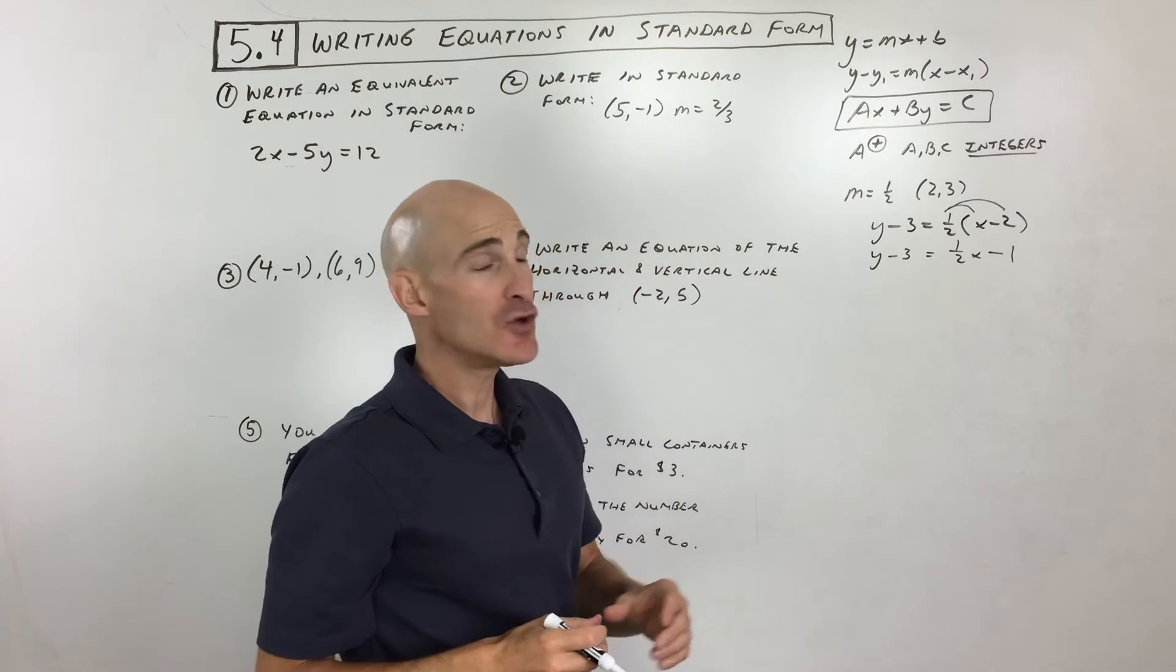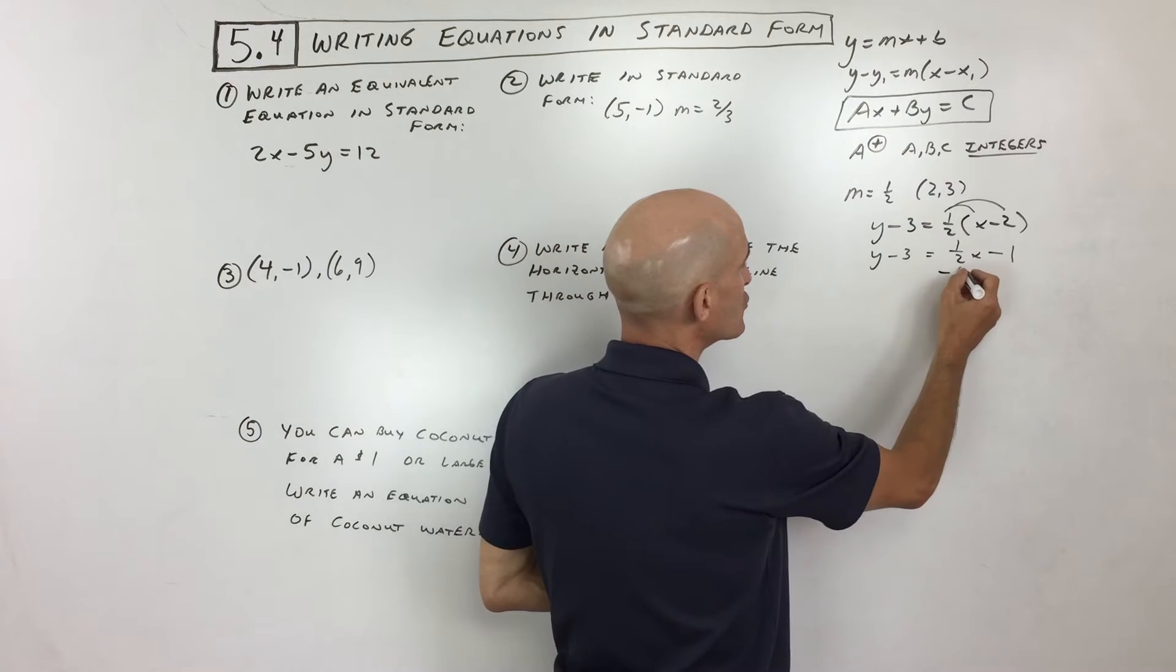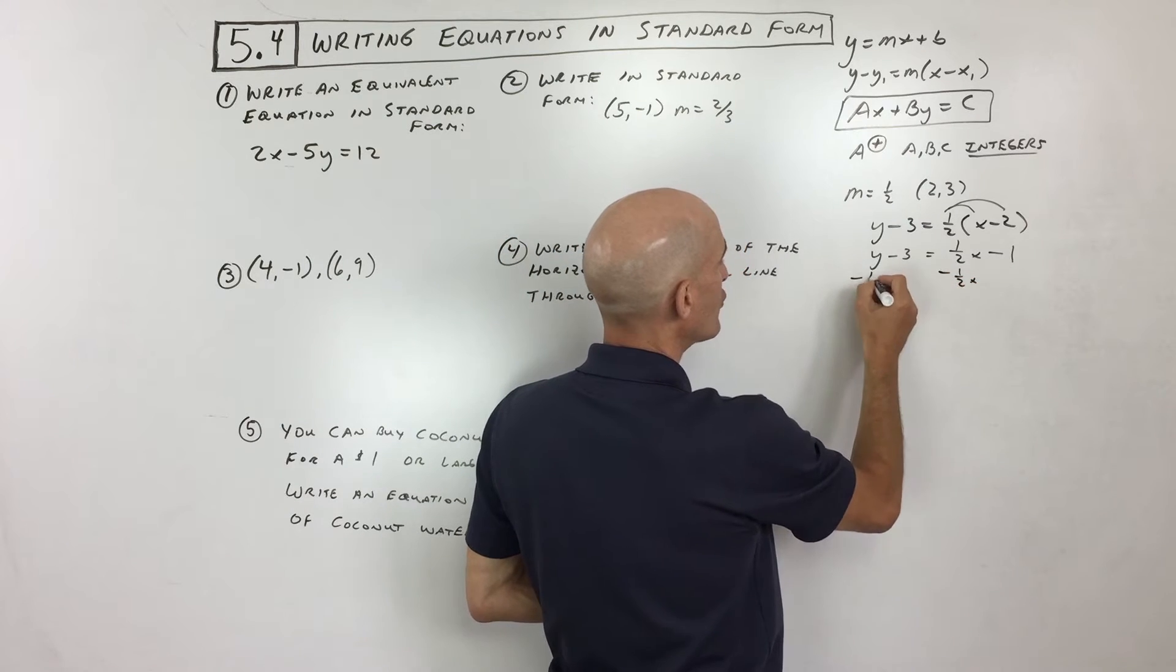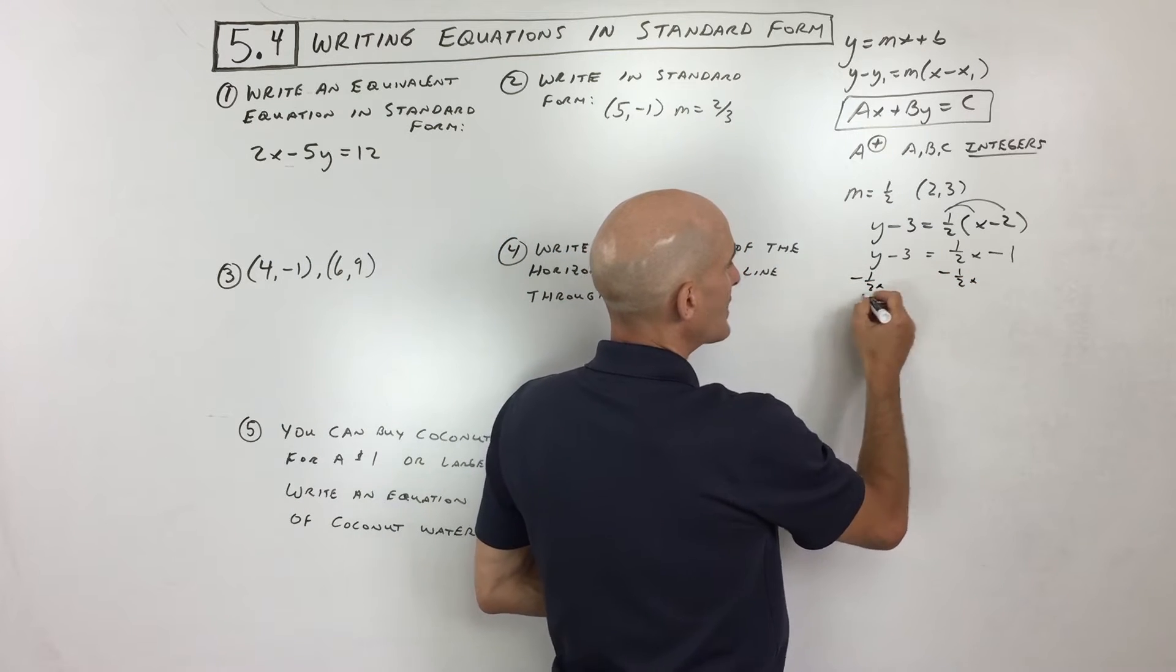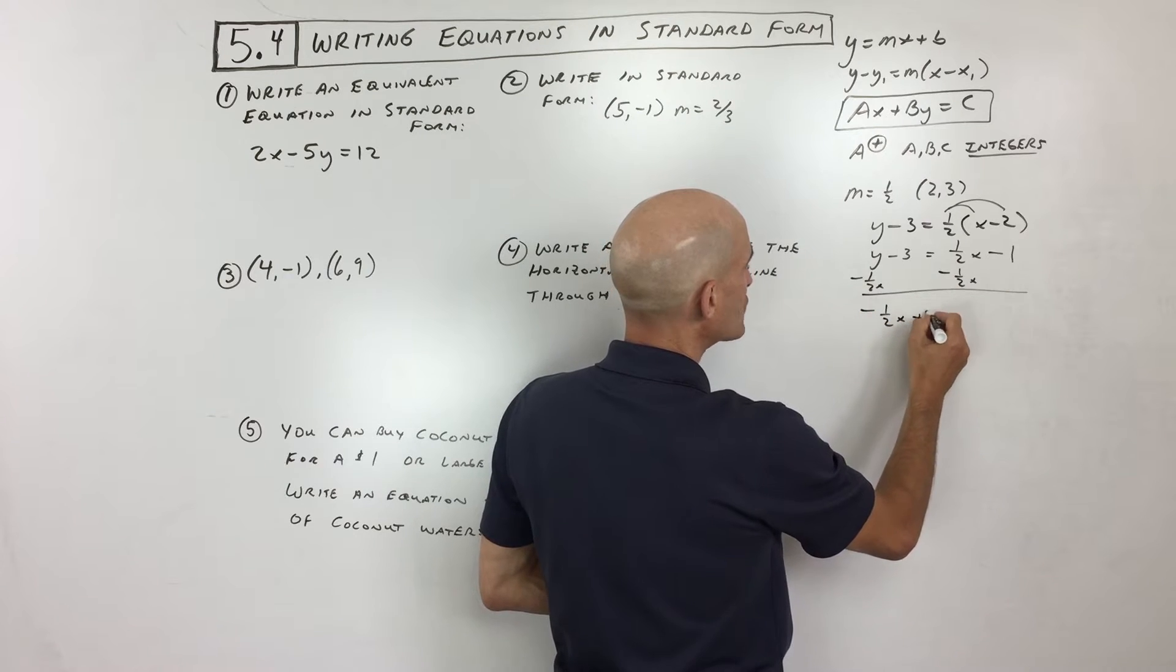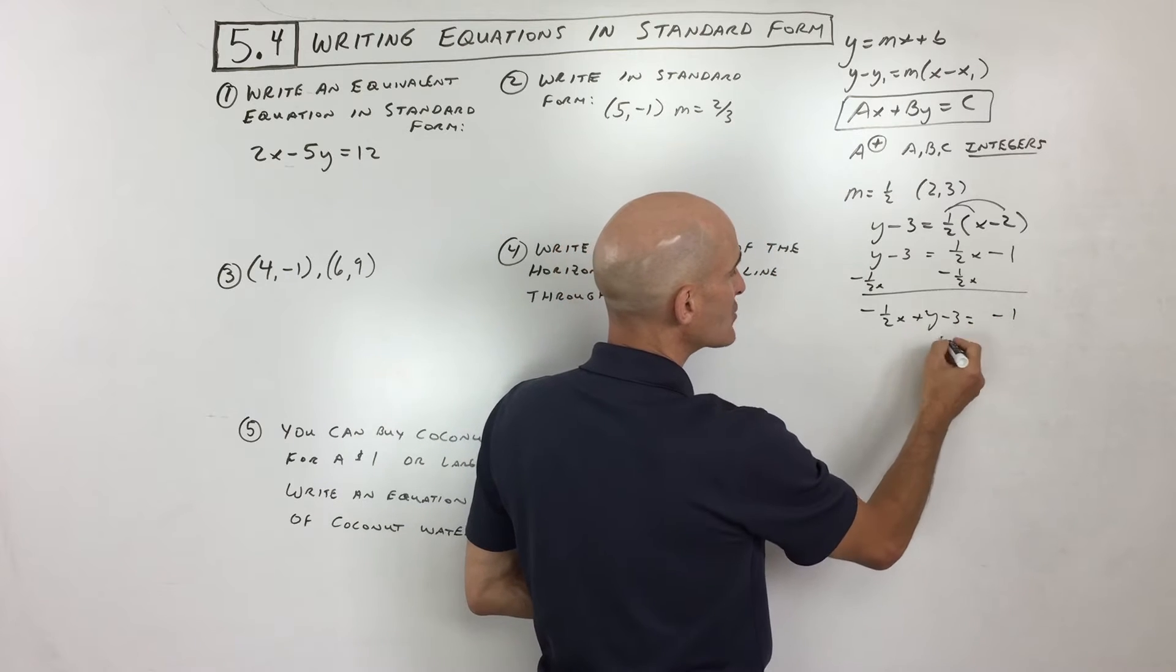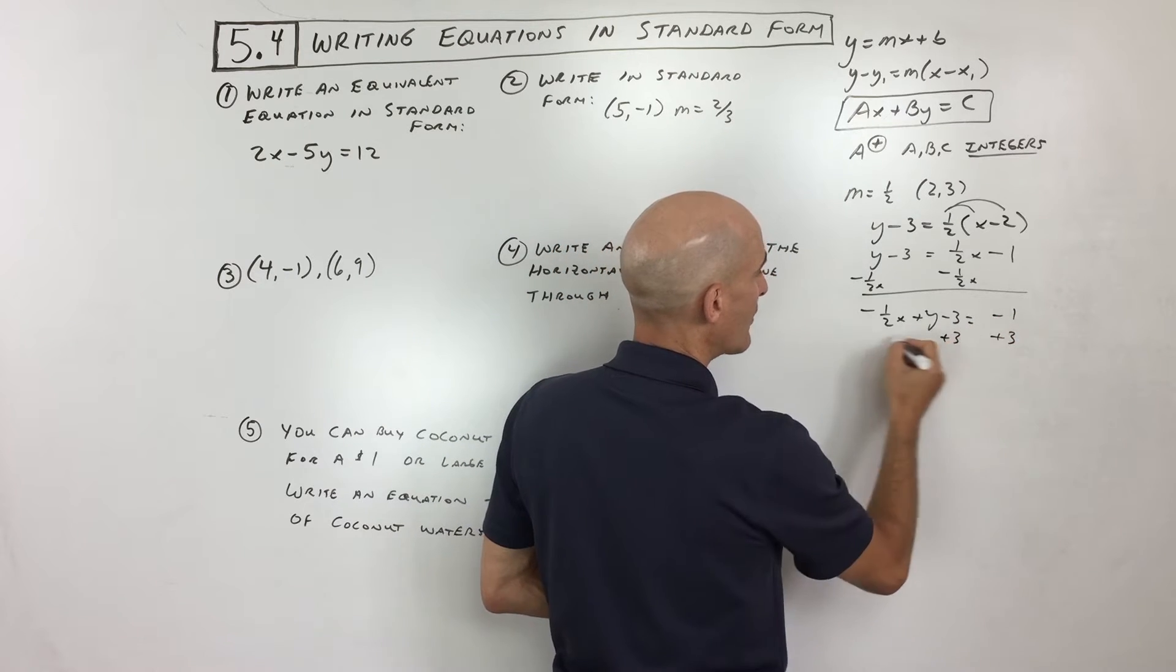Now, what we want to do is we want to get the variables on the left, numbers on the right. So what I'm going to do is I'm going to subtract the one-half x from both sides. Okay, so let's do that. So we have negative one-half x plus y minus 3 equals negative 1. We want the numbers on the right, so I'm going to do the opposite of subtracting 3. I'm going to add 3 to both sides.